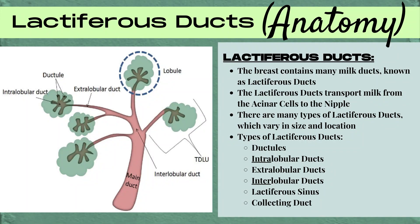First, let's dive into a little anatomy lesson. Lactiferous ducts are the milk ducts in the breast, and the breast contains many milk ducts. These lactiferous ducts transport milk from the acinar cells, which make the milk, all the way through a series of ducts to the nipple. There are many types of lactiferous ducts and they vary in size and location.